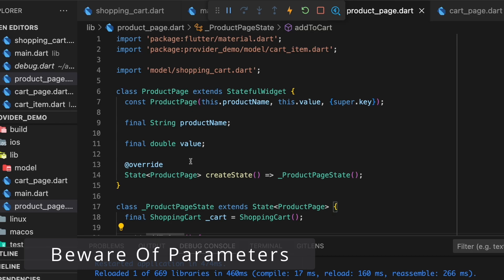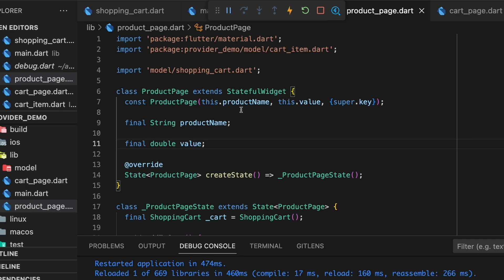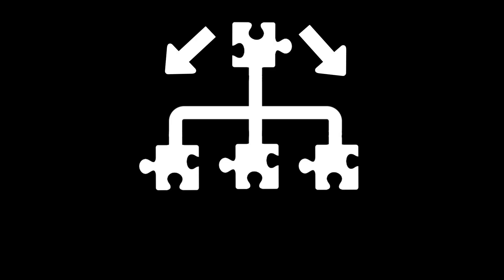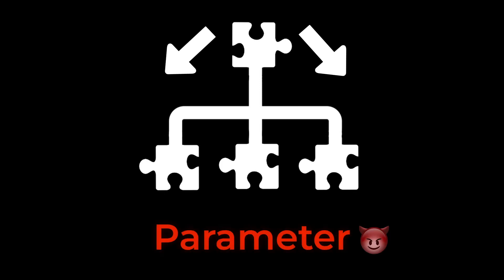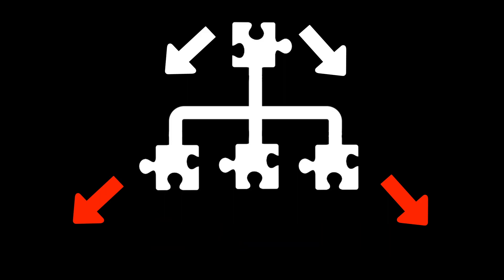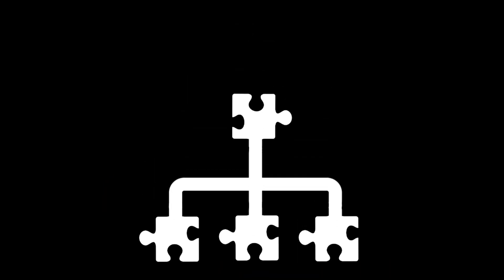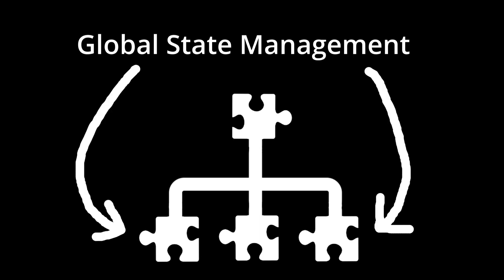Why do we even need all of this? Why use a provider package when we can just pass the state down via a parameter to child widgets? This is not a good idea because you might end up with prop drilling — when you extend the app you need to pass the state to more and more widgets with a lot of parameters to update. Flutter uses a declarative approach: you don't imperatively update the view, and state management libraries like Provider allow you to simply inject the state into the view.